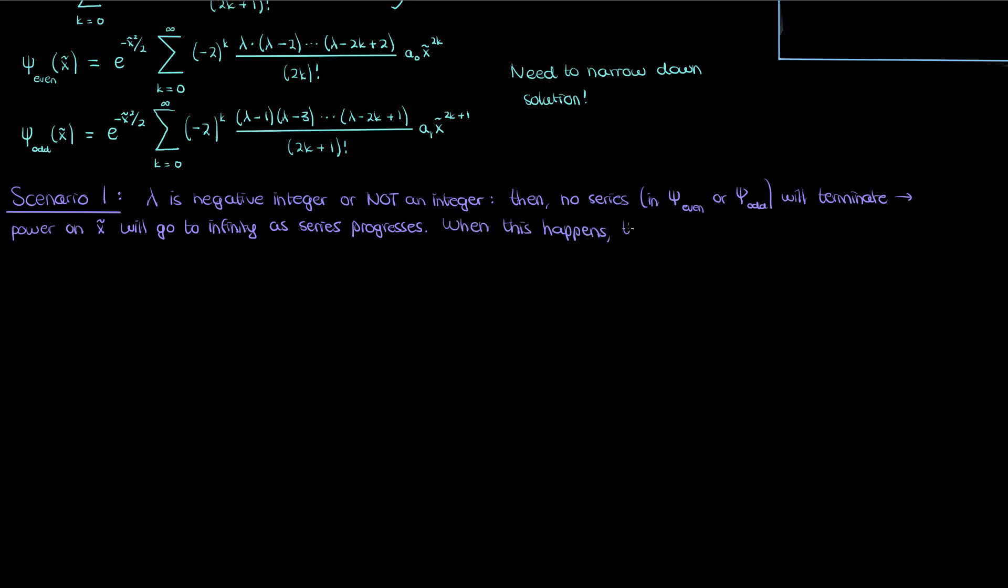When this happens then at the edges of the domain, at x tilde approaching positive or negative infinity, the individual terms on the series will approach infinity and will actually overpower the damping effect of the negative exponential. I'm going to show you why this is the case starting with the even series.